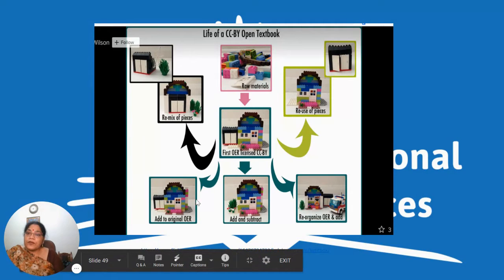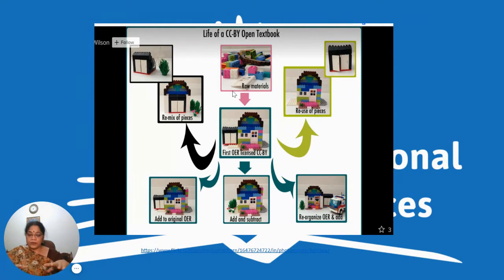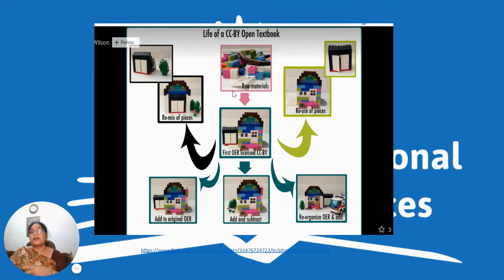A Creative Commons license is like a legal choice where you have a lot of elements and you mix them as per your need. Just like you want to make a crane, a house, or a car, you mix those legal resources accordingly.